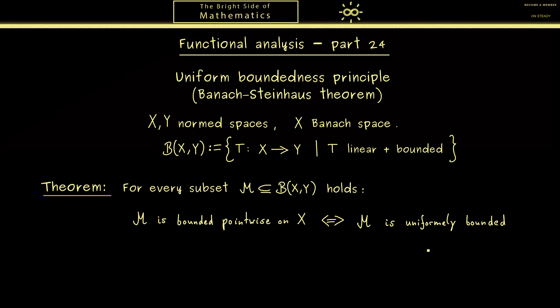Maybe the word uniformly bounded is easier to understand because it's just a normal definition of boundedness, just in a normed space B(X,Y) together with the operator norm. Therefore I can write that down as: there exists a constant C greater or equal than 0 such that for all operators T in M the operator norm of T is less or equal than C.